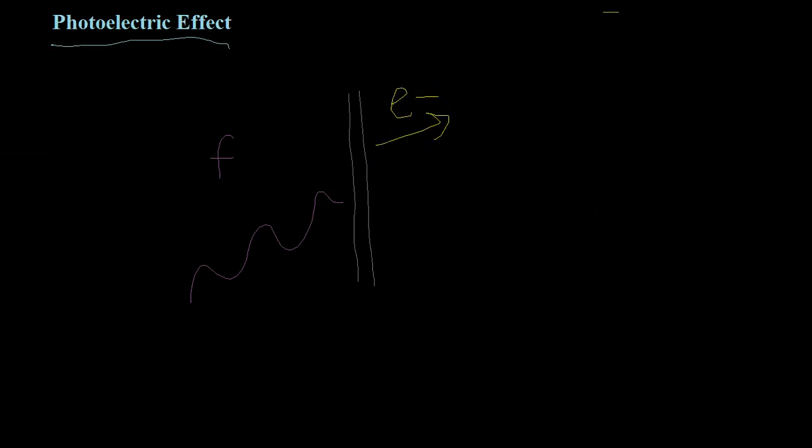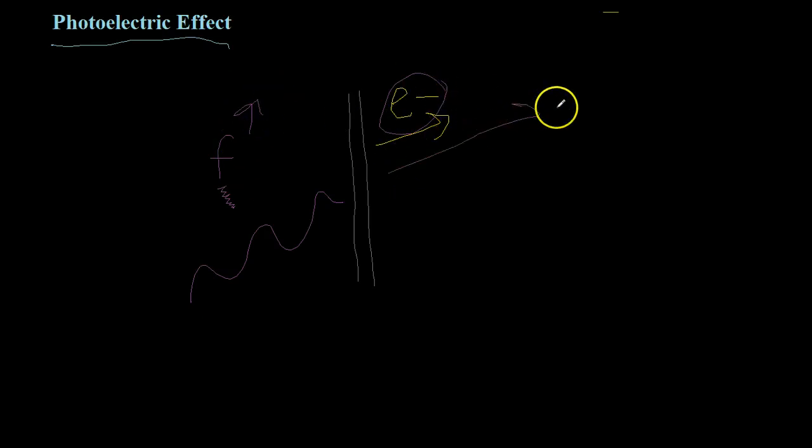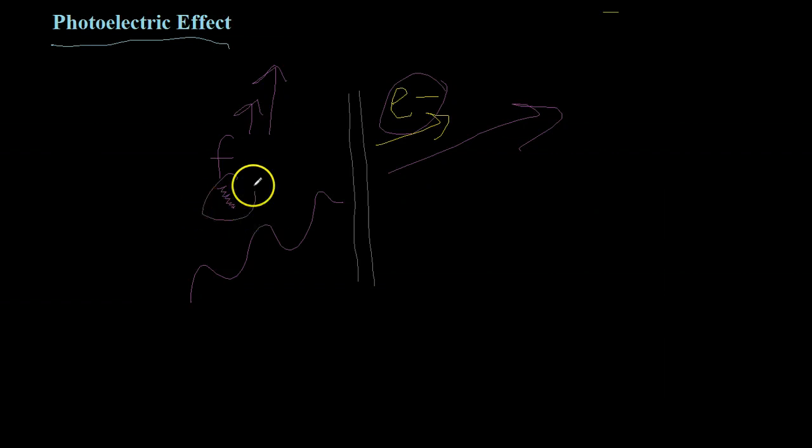Before this frequency, if it's anything below this frequency, you won't get any electrons at all, no matter how much light you're shining on it. However, once you get above this frequency, you'll start getting electrons shooting off. The more intense the light, the more electrons you'll get. However, to increase the speed of the electrons, you need to increase the frequency.